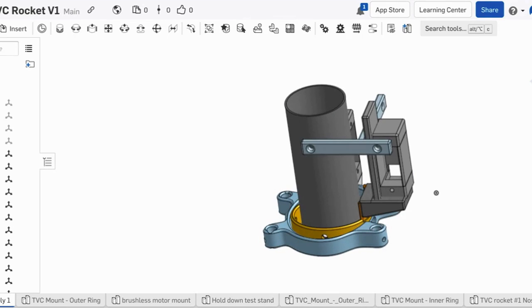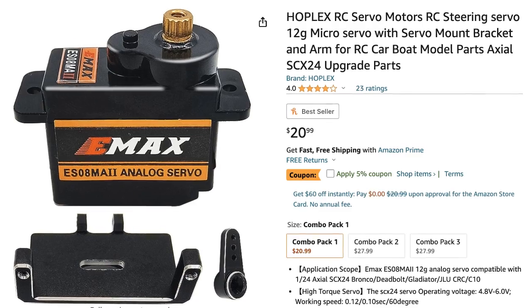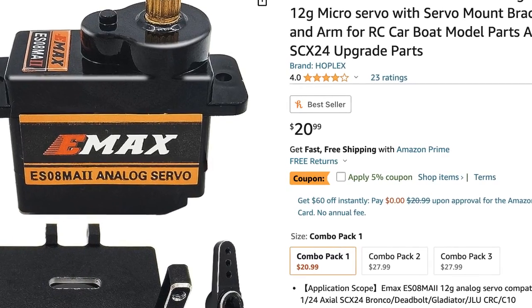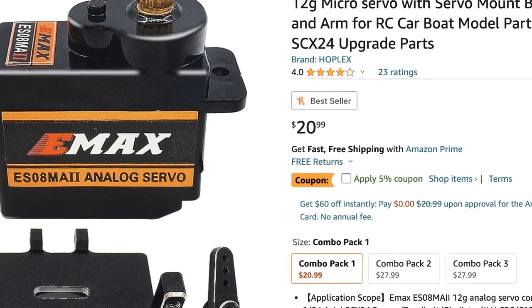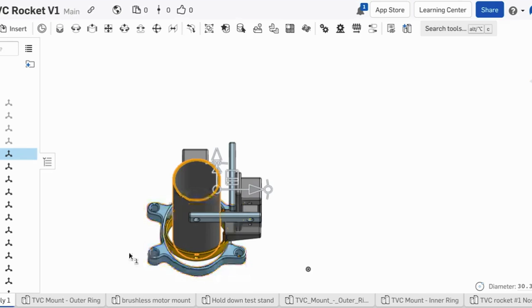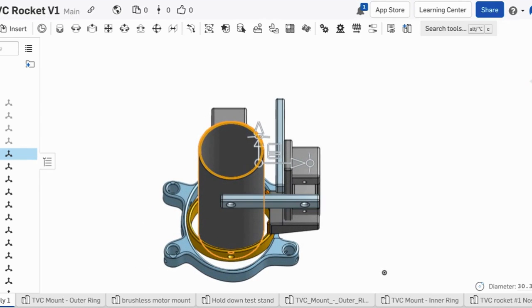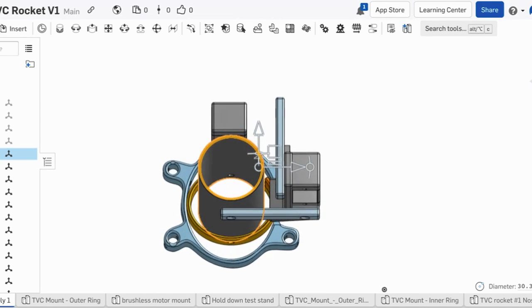I designed this thrust vectoring mount in OnShape and it uses two 12-gram servos with metal servo horns to point the motor mount in different directions. The motor mount is specced to fit a 29-millimeter motor, but with an adapter we can also fly 24-millimeter motors, which is what I plan on doing.